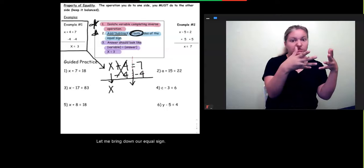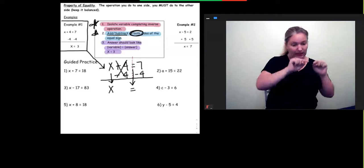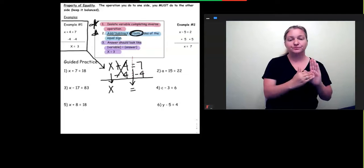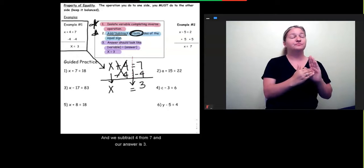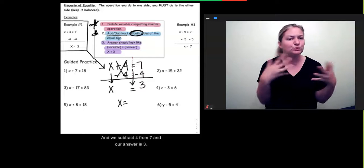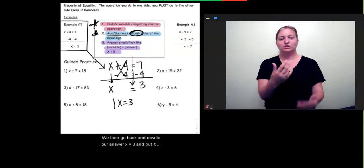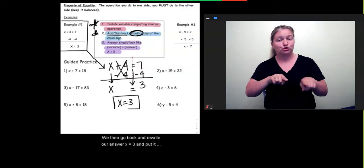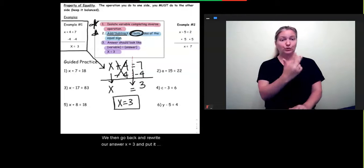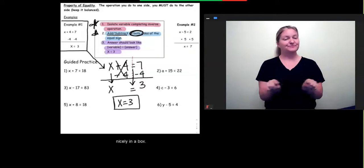Then we bring down our equal sign. And we subtract 4 from 7. And our answer is 3. We then go back and rewrite our answer, x equals 3, and put it nicely in a box.